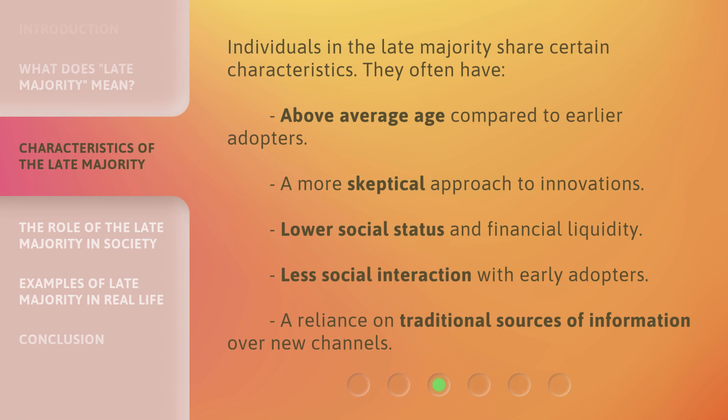Individuals in the Late Majority share certain characteristics. They often have an above-average age compared to earlier adopters, a more skeptical approach to innovations, lower social status and financial liquidity, less social interaction with early adopters, and a reliance on traditional sources of information over new channels.